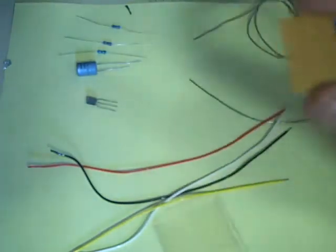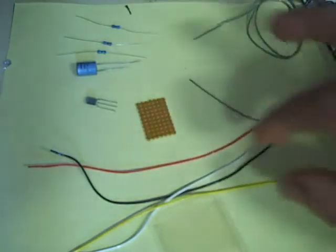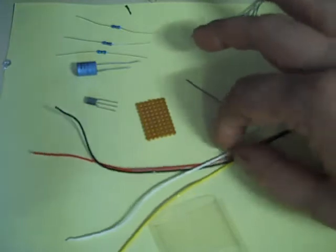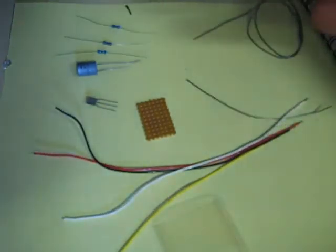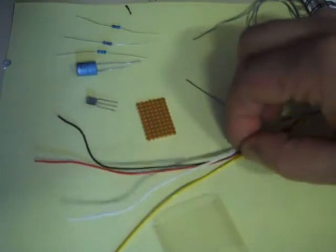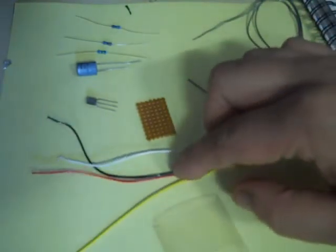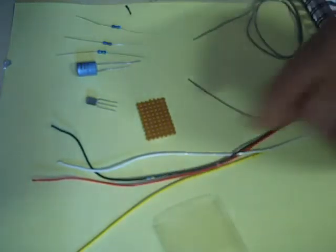We've got a little piece of strip board there. We've got four connecting wires to go to the actual console. Colors I've picked are what I like to stick with. We've got white for audio, yellow for the video signal, red for plus five volts, and obviously black for ground.